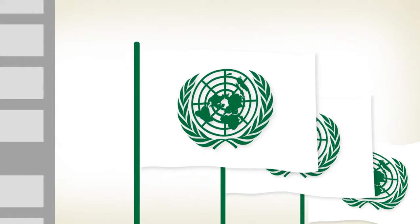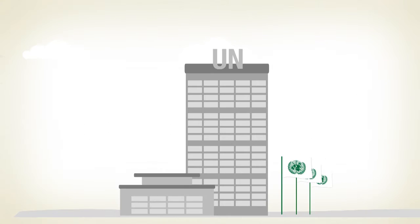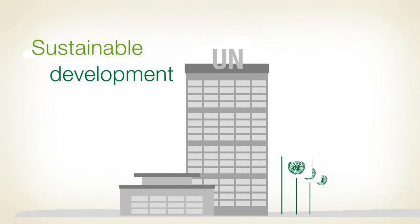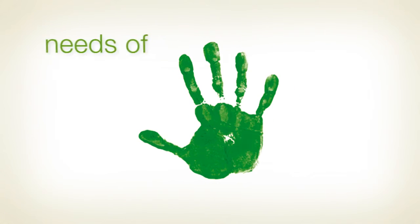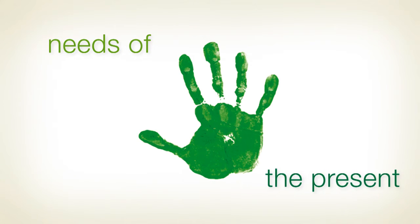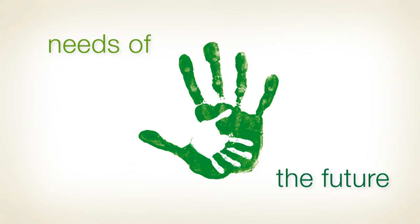In 1987, the United Nations defined sustainable development as development that meets the needs of the present without compromising the ability of future generations to meet their own needs.